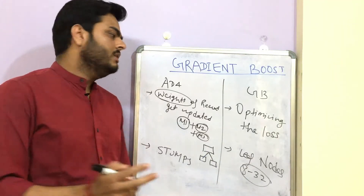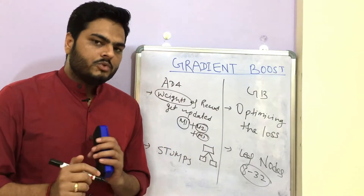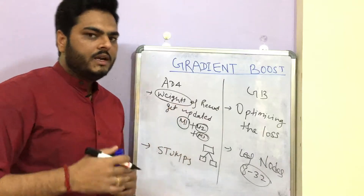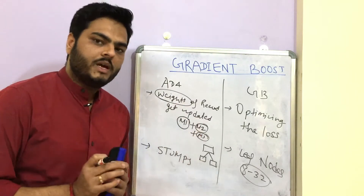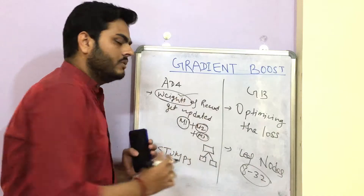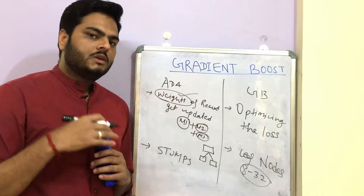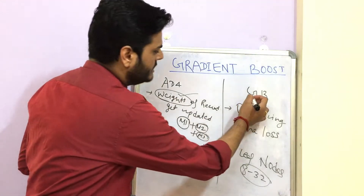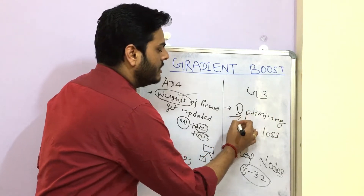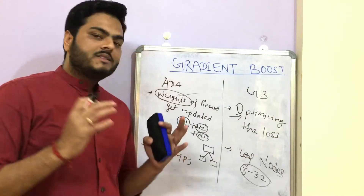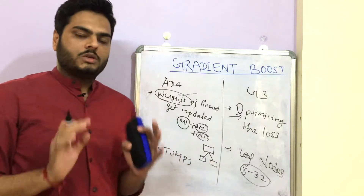So two differences between AdaBoost and gradient boost: number one, AdaBoost boosting happens by adjusting the weights of the misclassified records. On the other hand, in gradient boost, the assembling happens by optimizing the loss.